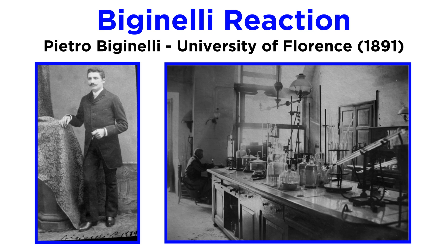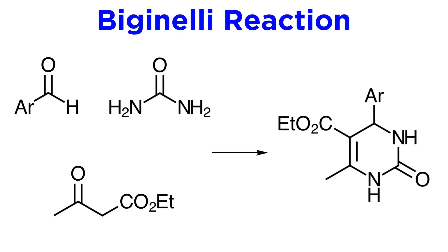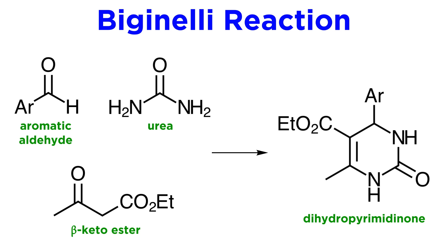This reaction was invented by Italian chemist Pietro Biginelli in 1891 while working at the University of Florence. It involves combining an aromatic aldehyde, urea, and a beta-ketoester — in this case ethyl acetoacetate — to produce a heterocyclic compound called dihydropyrimidinone. The reaction is catalyzed by Brønsted or Lewis acids.